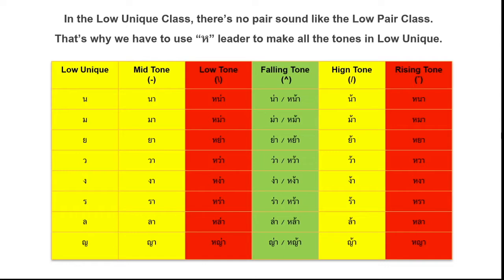We will focus on ho heep first. When you see the tone mark, we pronounce one step forward — so we move to falling tone. You will see the word with tone mark 1, and we pronounce it as falling tone.